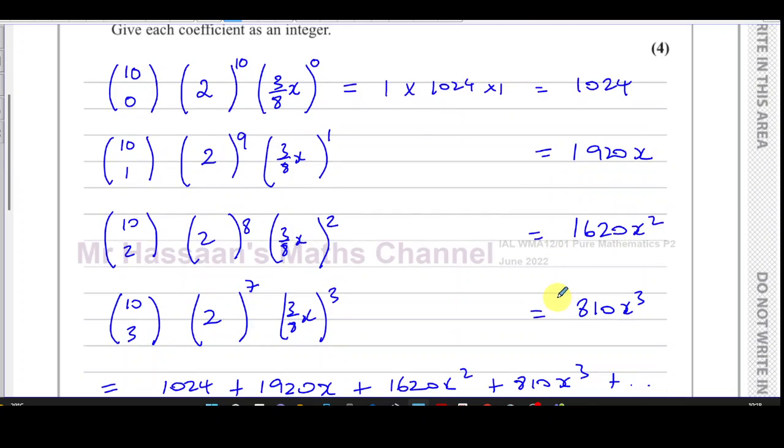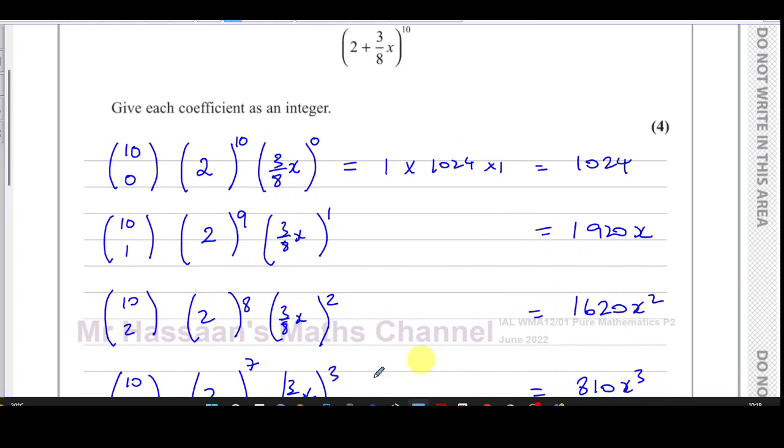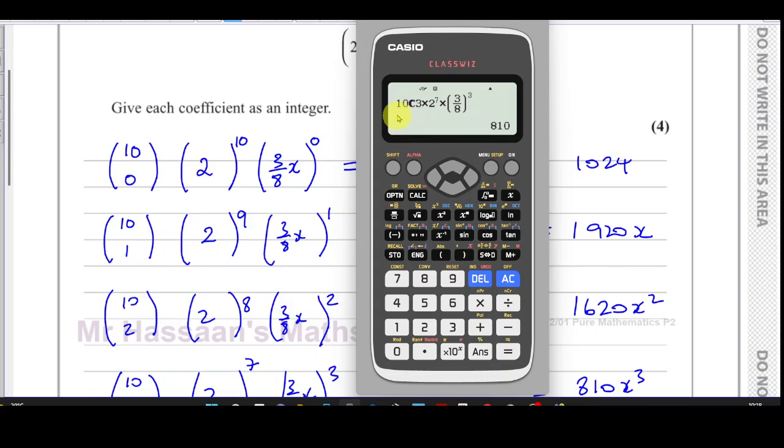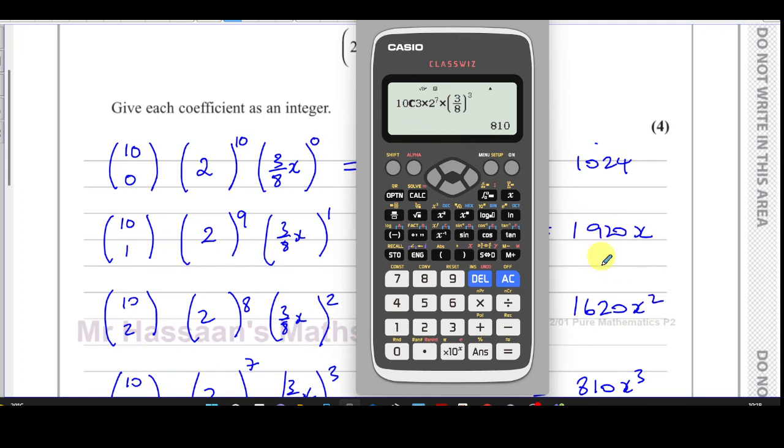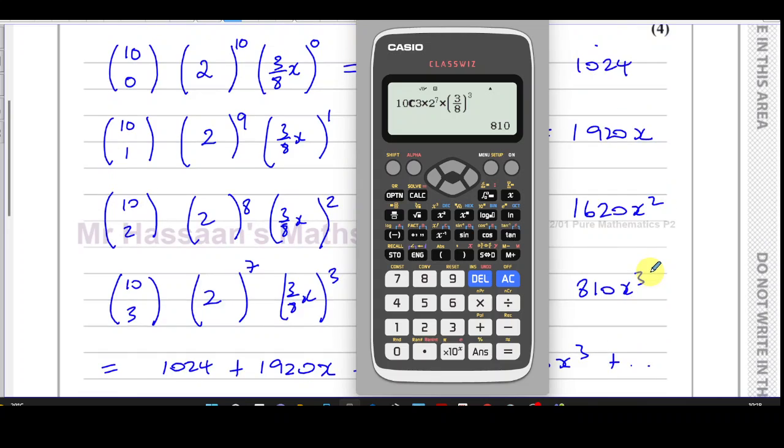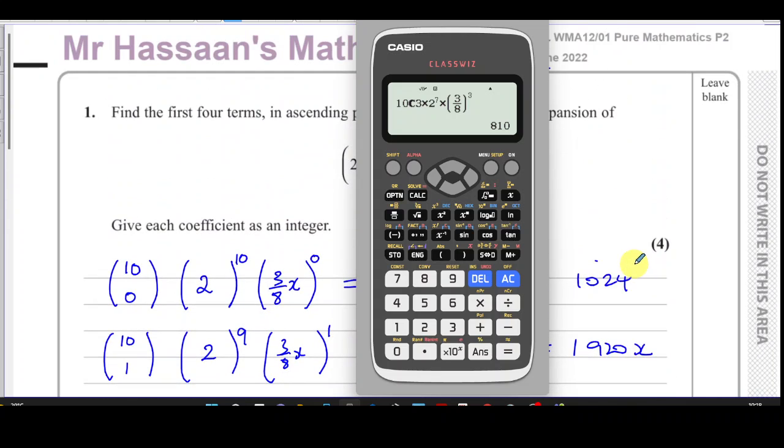Very easy and simply done using the NCR button. I've written down the steps of the first one, and the rest of them you can just stick that in your calculator and write down these terms. That's perfectly fine. So there's the answer to question number one from this P2 June 2022 international A-level Edexcel paper.